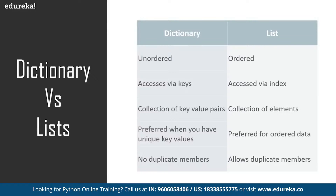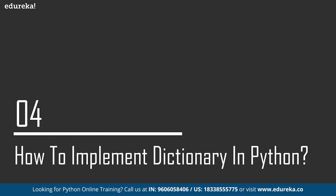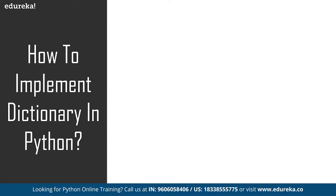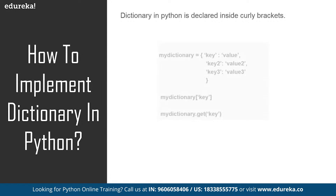Now that we have understood what a dictionary is in Python, why we use it, and how it is different from a list, let's try to understand how we implement a dictionary in Python. To declare a dictionary in Python, we have to use the curly brackets. Just like you can see in the example here, I have a dictionary with the name 'my_dictionary' and inside it I have the key-value pairs inside the curly brackets. Let's take it up to PyCharm to understand how we implement a dictionary in Python.